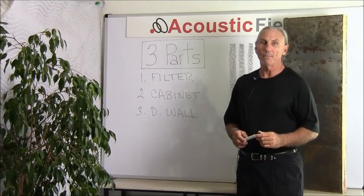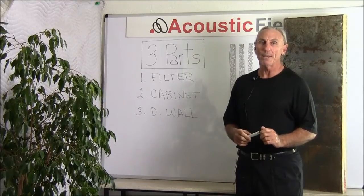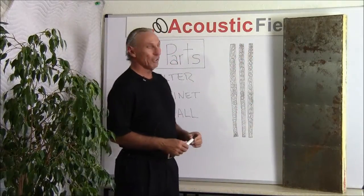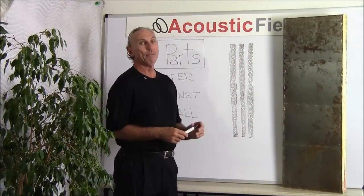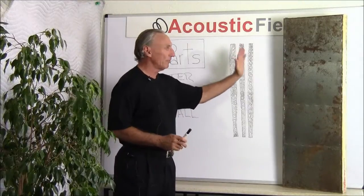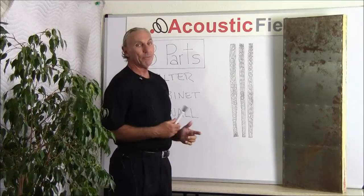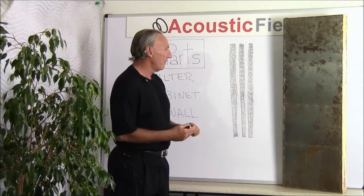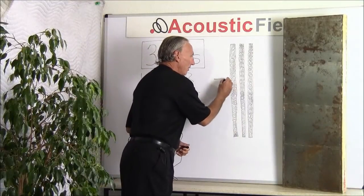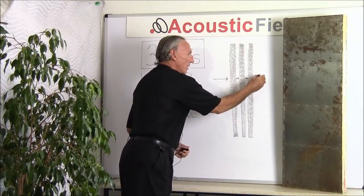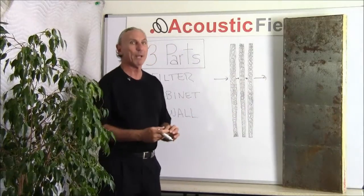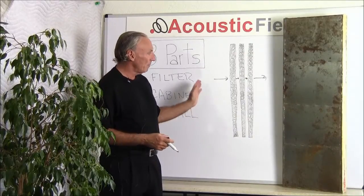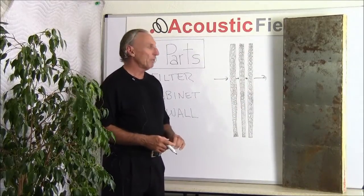I broke it down into three main parts and we're going to go over each part today. The first part is the filter, and as you can see here, it's 65 pounds of activated carbon distributed with seven smaller filters inside of this thick cavity. This is how we get the maximum amount of air flow and exposure to the activated carbon, because the activated carbon has such a high degree of porosity and such a large surface area of coverage.